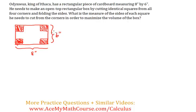So the question is: what is the measure of the sides of each square that he needs to cut from the corners in order to maximize the volume of the box? Each one of these measures x, all of them measure x. And so these little dotted lines is where the cardboard box is gonna get folded.